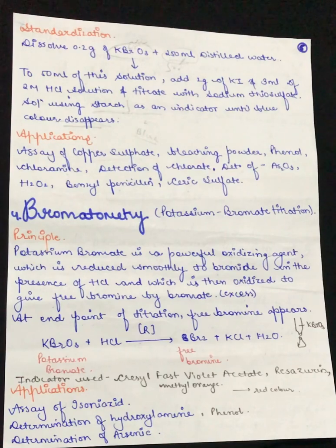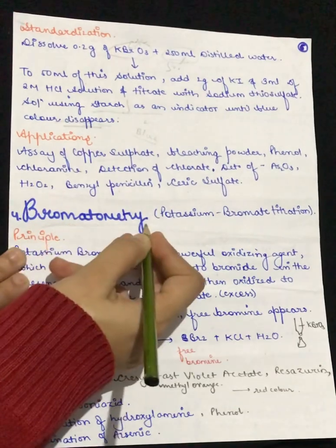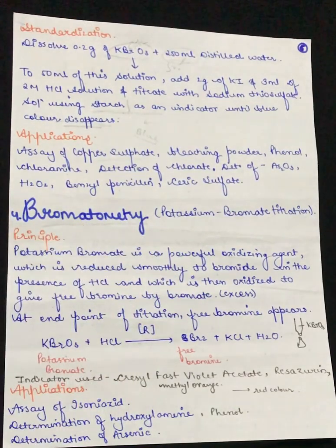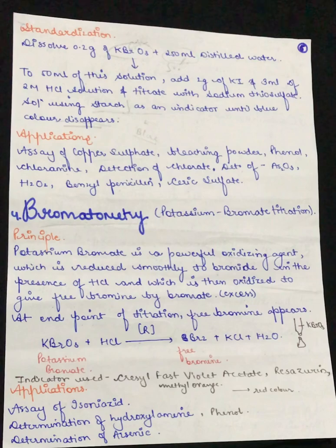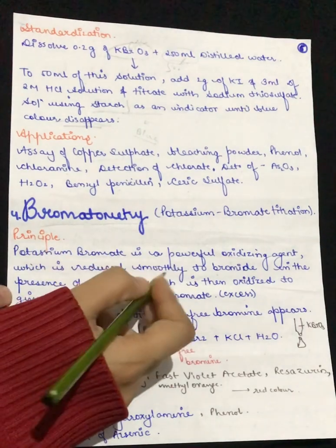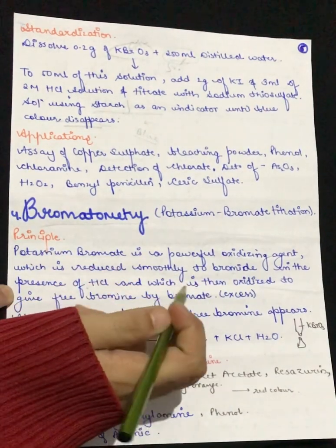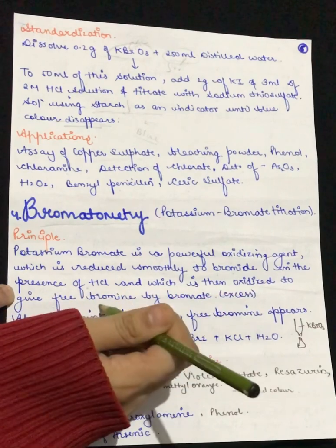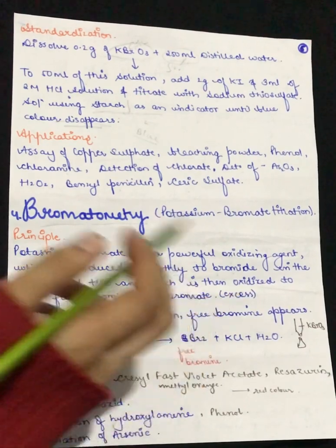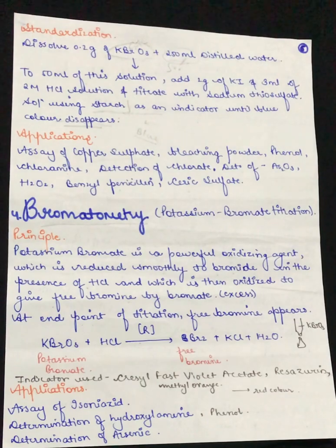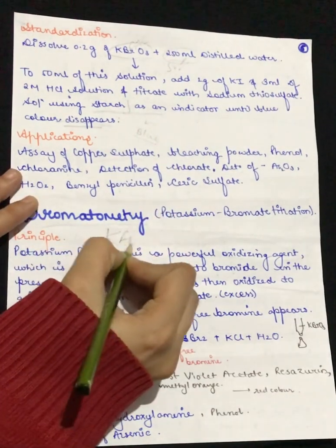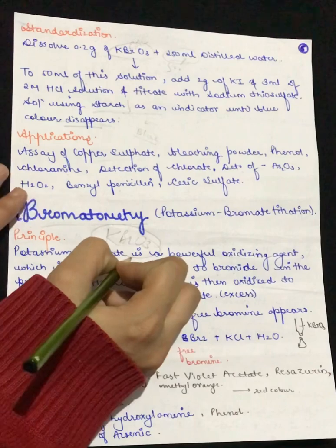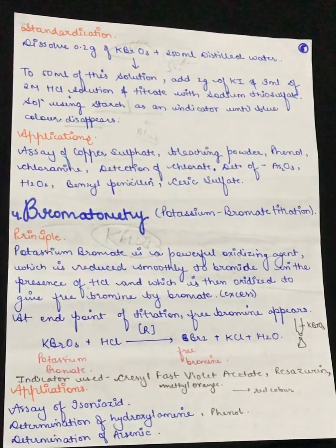In this video we are going to study another type of redox titration — bromometry, which is also known as potassium bromate titration. It is based on the principle that potassium bromate (KBrO3) is a powerful oxidizing agent, which is reduced to bromide in the presence of HCl and is then oxidized to give free bromine.